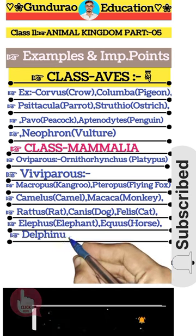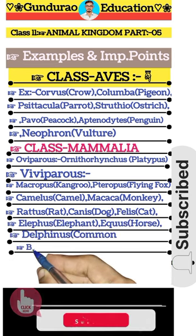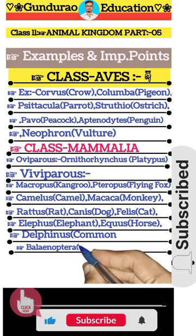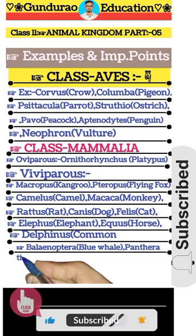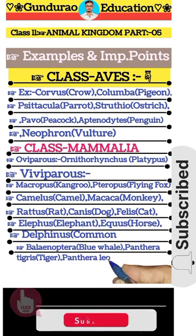Equus — Horse. Delphinus — Common Dolphin. Balaenoptera — Blue Whale. Panthera tigris — Tiger. Panthera leo — Lion.